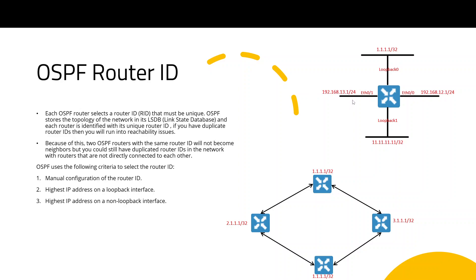It is the highest IP — so 13.1. If you look at this IP, if you look at this router, you will see the Router ID.